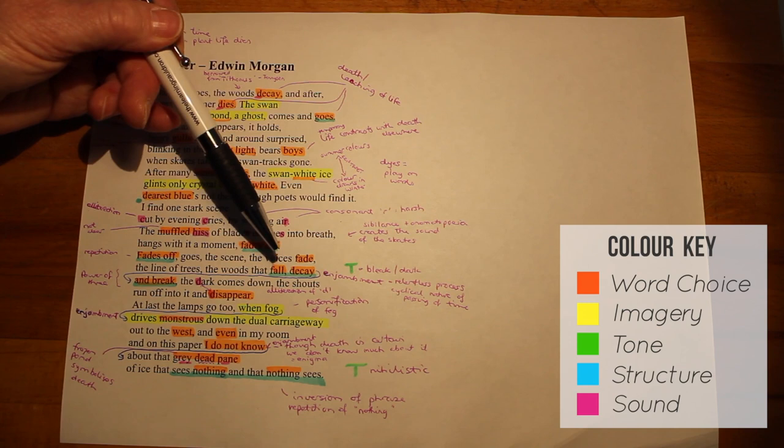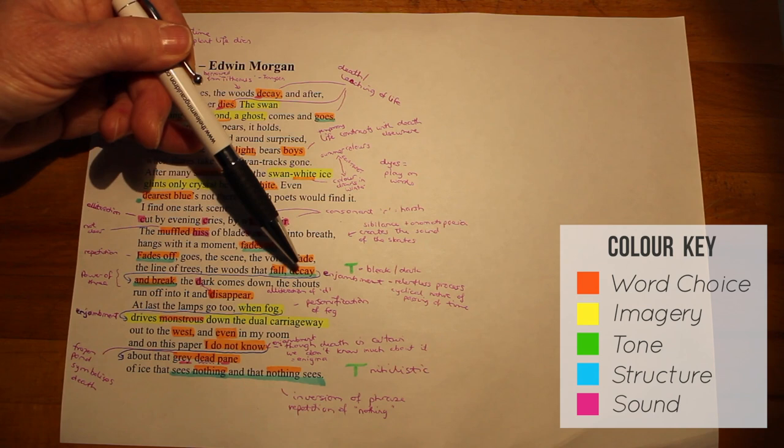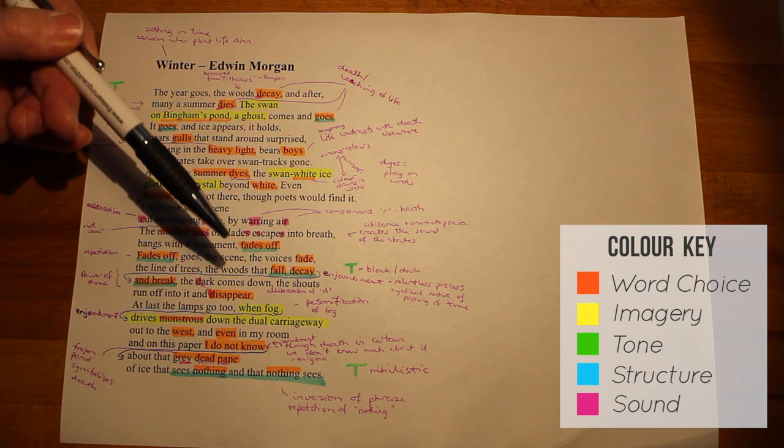And another structural technique that's used here is the power of the rule of three. The woods that fall, decay and break. These are all very negative words. The tone here is bleak and dark and the enjambment is used after decay to lead on into the next line. And it shows the relentless process, the cyclical nature of the passing of time.